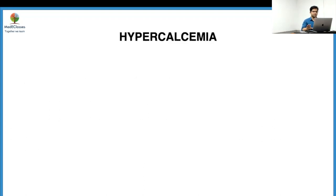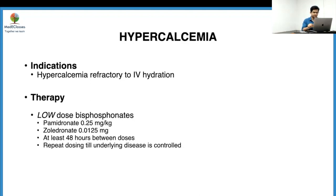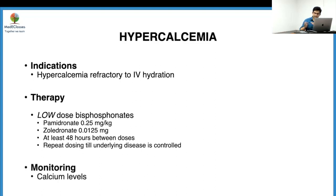For hypercalcemia, bisphosphonates are used only when refractory to dietary restrictions and IV hydration. They are always given at a low dose: pamidronate at 0.25 mg/kg and zoledronate at 0.0125 mg/kg, with at least 48 hours between doses. Repeat dosing until the underlying disease is controlled. Calcium levels should be monitored within the first 72 hours. Note that this dose is much less — approximately half to a quarter — of the 1 mg/kg dose sometimes mentioned in general pediatrics.